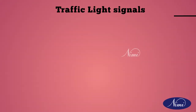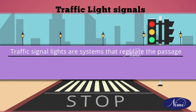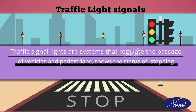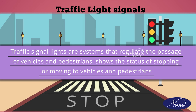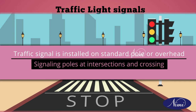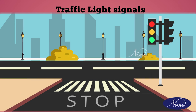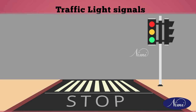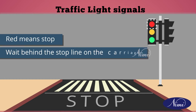Next are traffic light signals. Traffic signal lights are systems that regulate the passage of vehicles and pedestrians, showing the status of stopping or moving. Traffic signals are installed on standard poles or overhead signaling poles at intersections and crossings. In traffic light signals there are generally three different colors: red, amber and green. Red means stop — wait behind the stop line on the carriageway.